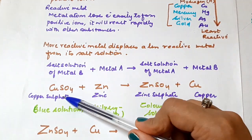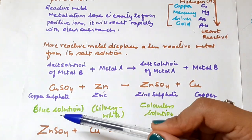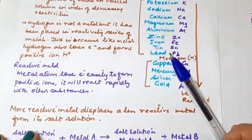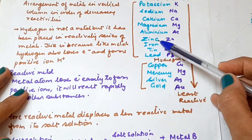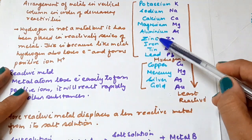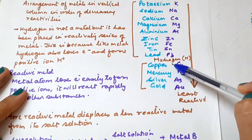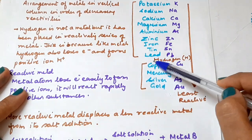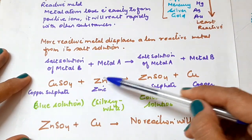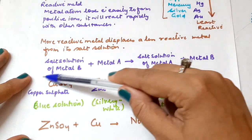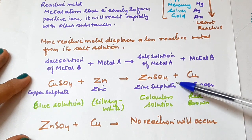Copper sulfate is reacting with zinc. We know that a more reactive metal displaces a less reactive metal. In the reactivity series, zinc is more reactive than copper. So zinc will displace copper from its salt solution. Since zinc is more reactive, it will remove copper from the copper sulfate solution. The products formed are zinc sulfate plus copper.